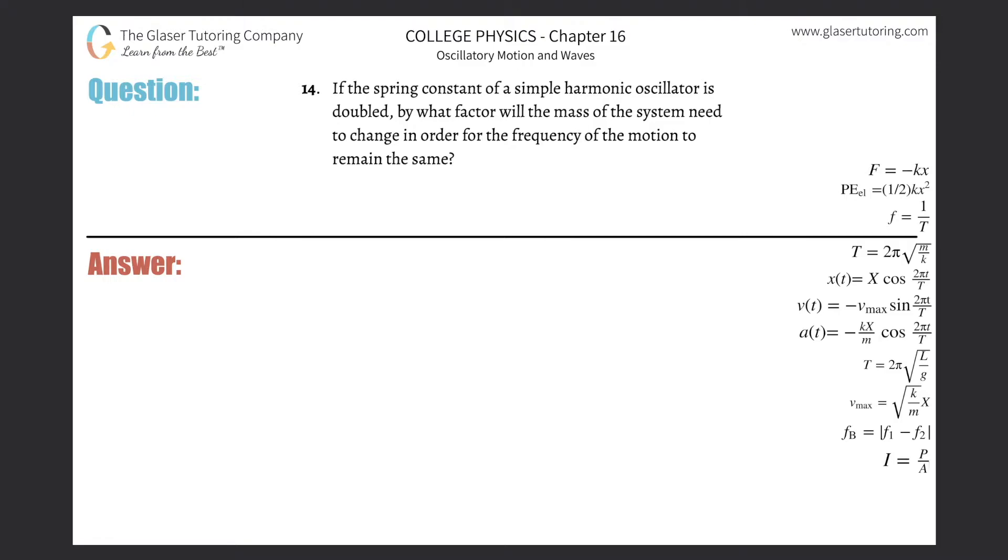Number 14: If the spring constant of a simple harmonic oscillator is doubled, by what factor will the mass of the system need to be changed in order for the frequency of the motion to remain the same?